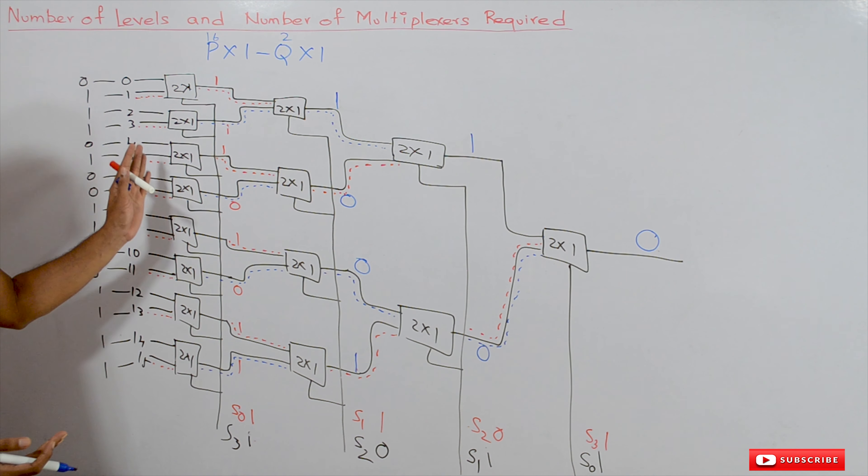To get the number of multiplexers required, use the formula: sigma of (p / q^k) for k = 1 to log(p) base q. For a 16 by 1 multiplexer using 2 by 1 multiplexers: 16/2 + 16/2^2 + 16/2^3 + 16/2^4 = 8 + 4 + 2 + 1 = 15. So the total number of multiplexers required to implement a 16 by 1 multiplexer using 2 by 1 multiplexers is 15.